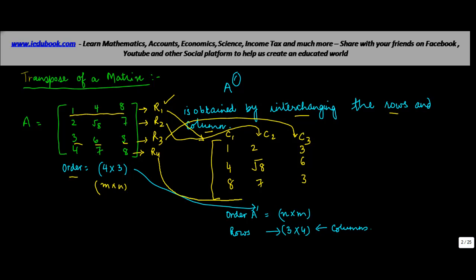And last but not the least, R4 becomes C4: 4, 7, 8. So, what happened was, we obtained a new matrix called transpose of A by interchanging the rows and columns.